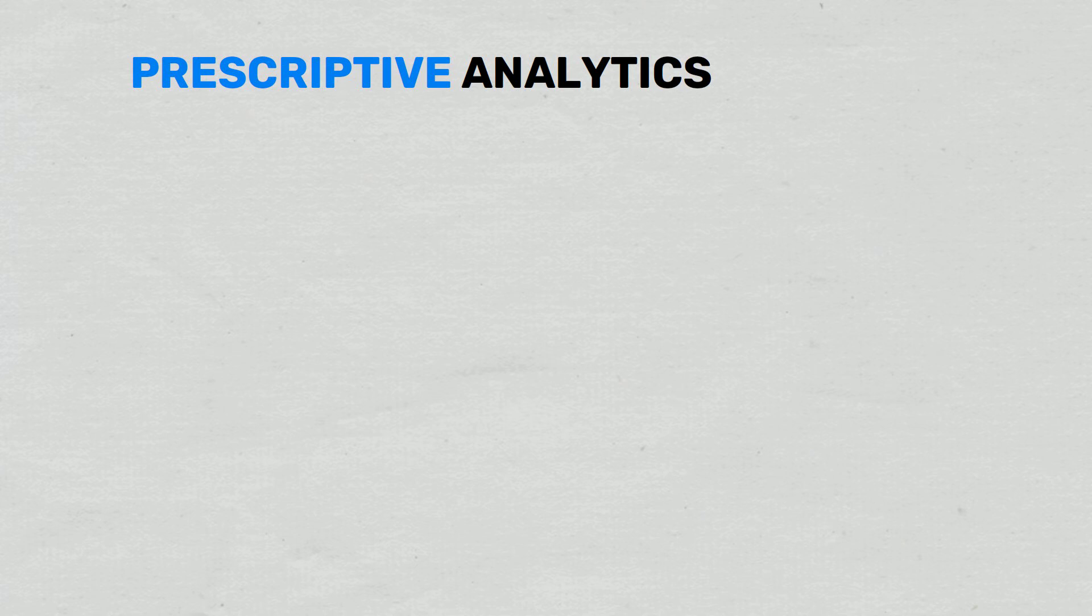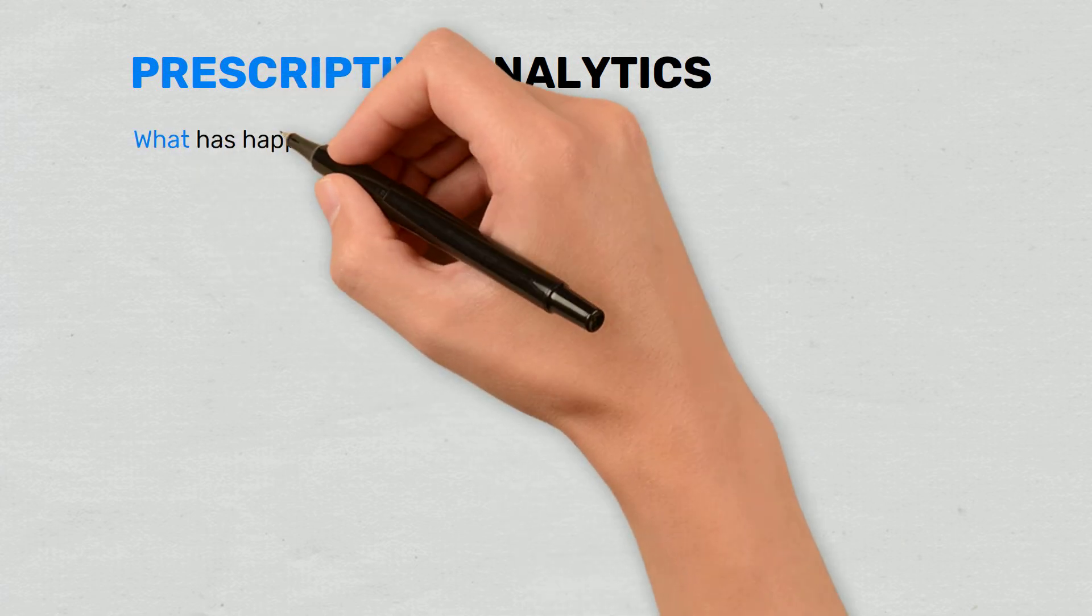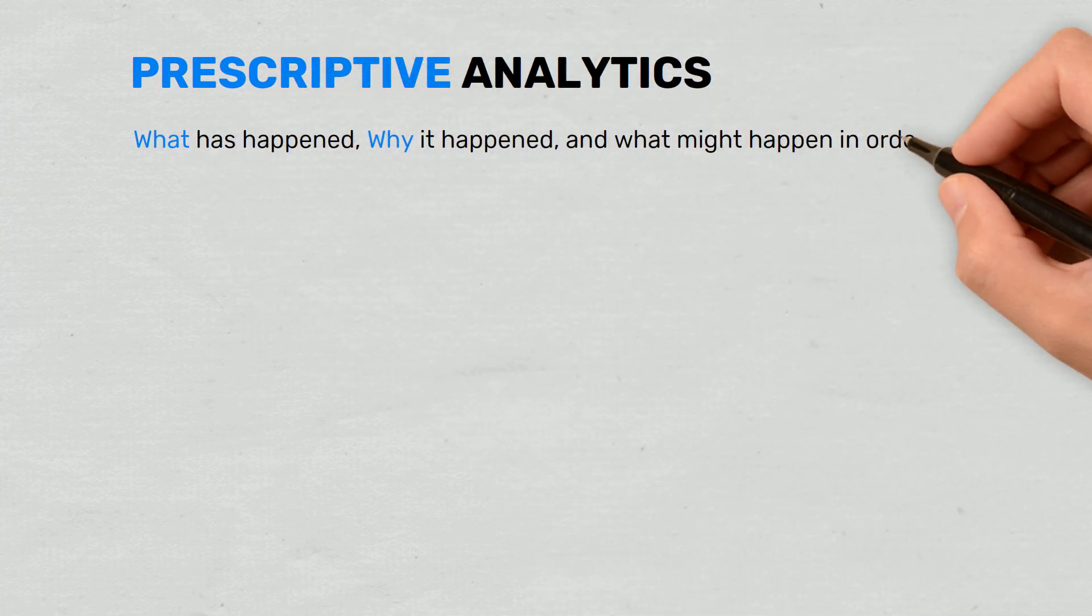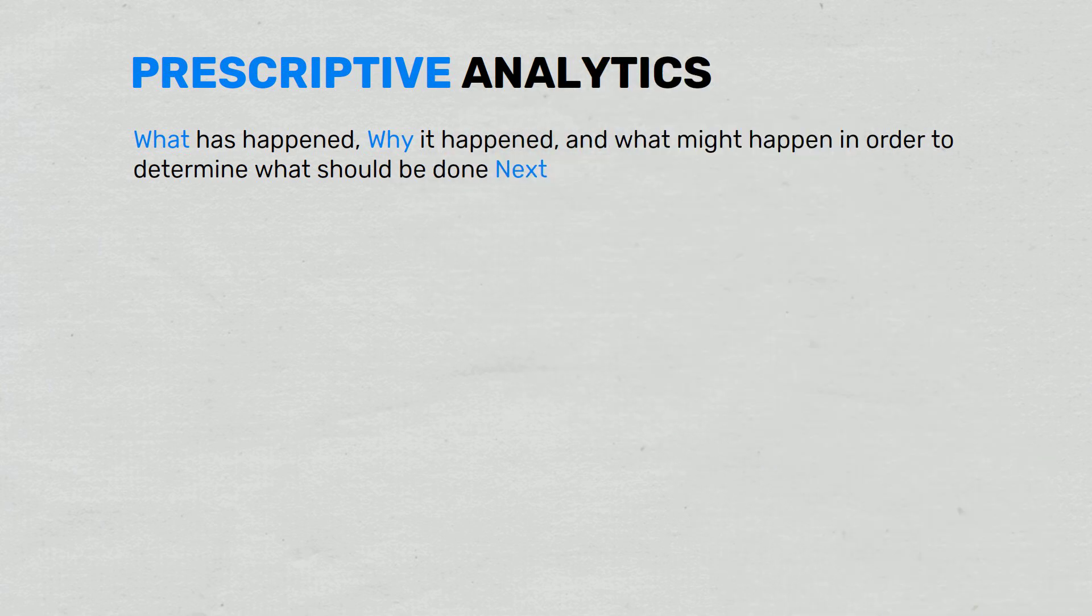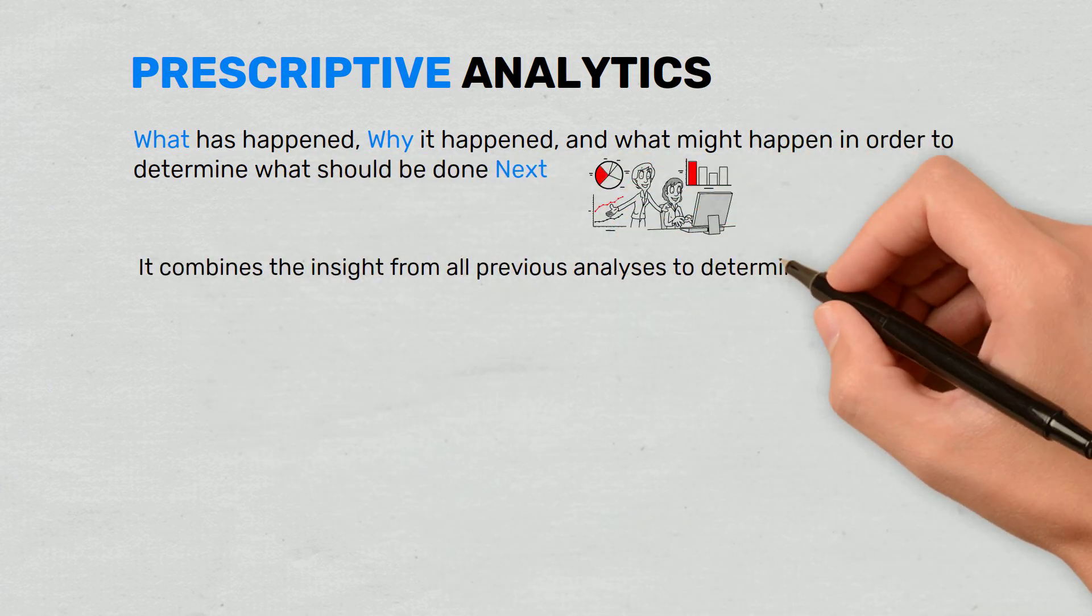The last type of analytics is prescriptive analytics. Prescriptive analytics looks at what has happened, why it happened, and what might happen, in order to determine what should be done next. It combines insights from all previous analyses to determine the course of action to take in a current problem or decision.